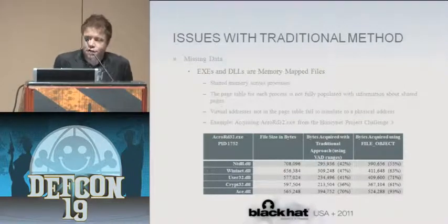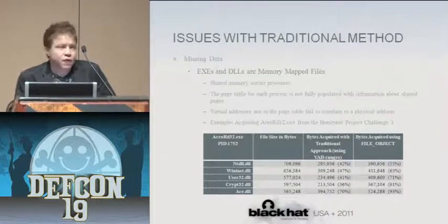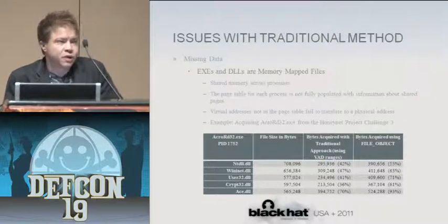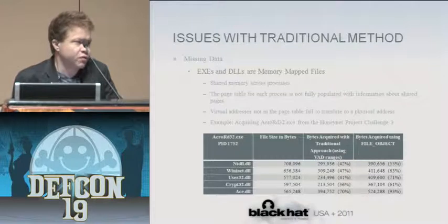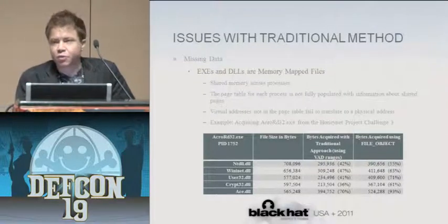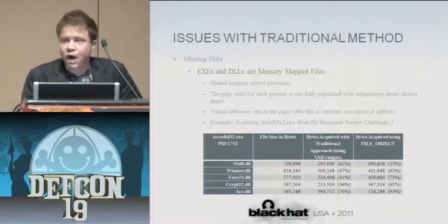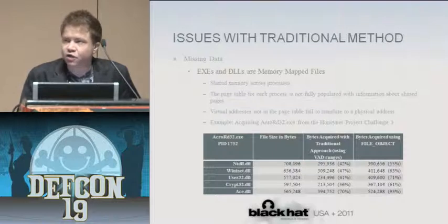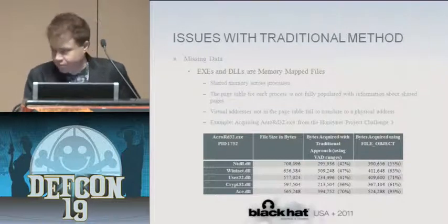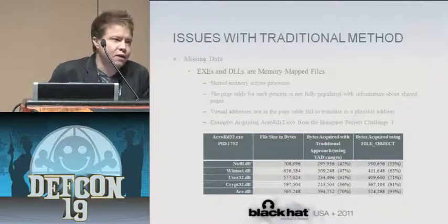As Justin mentioned, the traditional approach in current memory forensic tools is to take a virtual address base and a size — even if that virtual start is zero and size is four gig — brute force across the whole thing and do the translation in the context of the process you're analyzing. Every process has a directory table base used for virtual-to-physical translation, telling you what's in the process context. What we found in our research is that there's a lot of data actually missing if you do this.